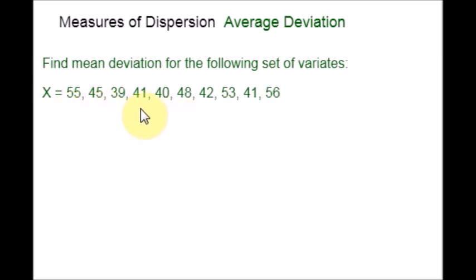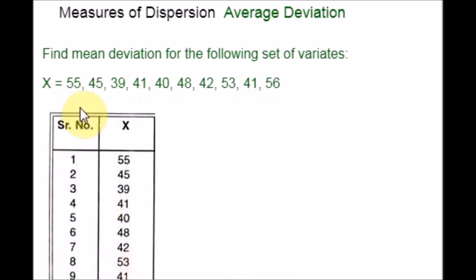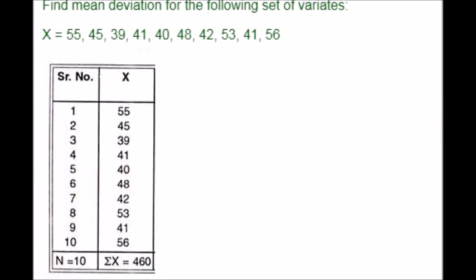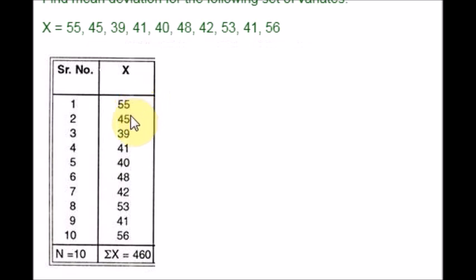Just add all the information and divide it by total number of data given. 55 plus 45. So, you should add all these numbers divided by, there are 10 data given, divided by 10. Let me show everything in a table form. I have written the serial number so that you can understand how many number of data is given. And the second column is the data. Total number of data. Just add everything. Summation of x is sum total of x is 460.